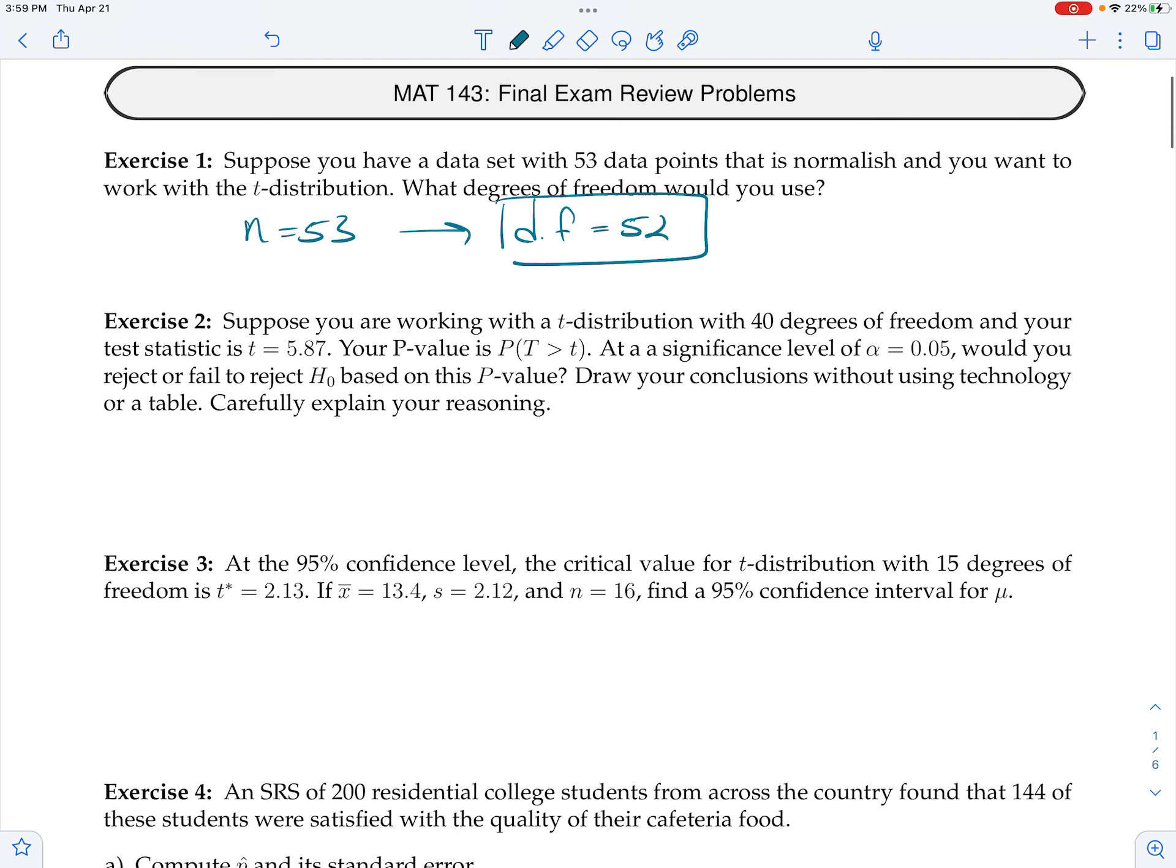The second problem, we're working with the t-distribution with 40 degrees of freedom, and our test statistic is 5.87. Our p-value is this right-hand tail, and we're told at the significance level alpha equals 0.05, would you reject or fail to reject the null hypothesis based on this p-value? We don't know what the null hypothesis is, but we know that this is the corresponding test statistic. And so we're asked to draw conclusions without using technology or a table and to explain.